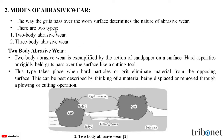There are two types: two-body abrasive wear and three-body abrasive wear. In the case of two-body abrasive wear, it is exemplified by the action of sandpaper on a surface — that is, the hard asperities or rigidly held grits pass over the surfaces like a cutting tool.